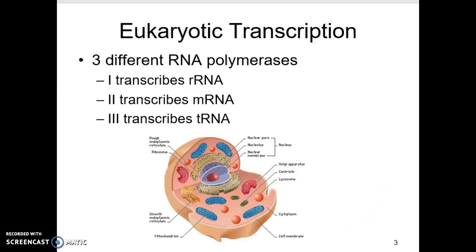When we look at eukaryotic cells — our cells, animal cells, plant cells, fungal cells, and the protists — as they go through transcription, taking DNA and turning it into RNA, they actually use three different RNA polymerases. There's the rRNA, the mRNA, and the tRNA polymerase. The polymerase creates each of these structures.